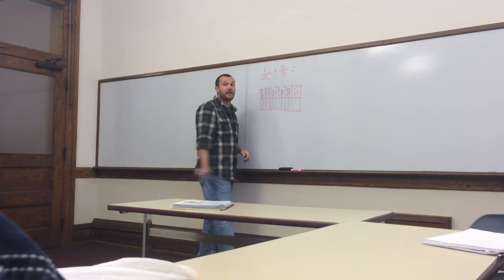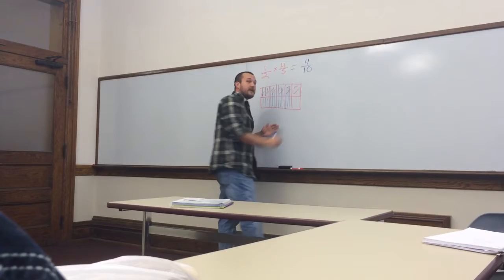As we see here, we have 10 total squares, and 1, 2, 3, 4 of them are covered by red and blue markers. So therefore, it's equal to 4 tenths.